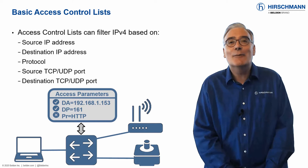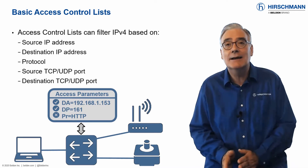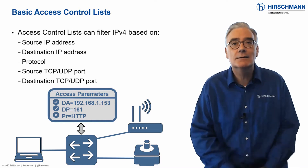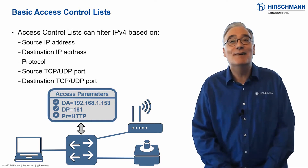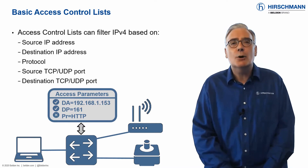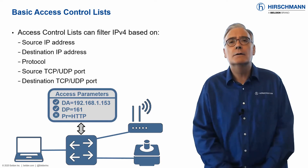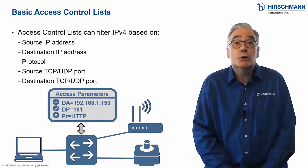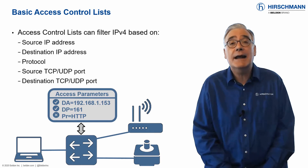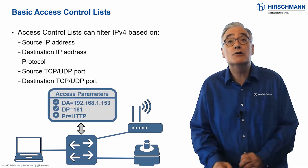In HiOS, we've divided ACLs into two categories called Basic and Advanced. Don't be fooled by the names. Basic has limited configuration options, but these options are extremely powerful. You can decide to permit or deny communication based on IP addresses or protocols.